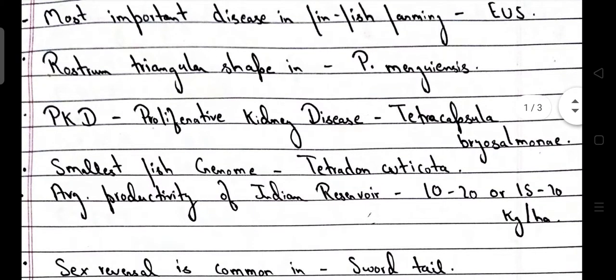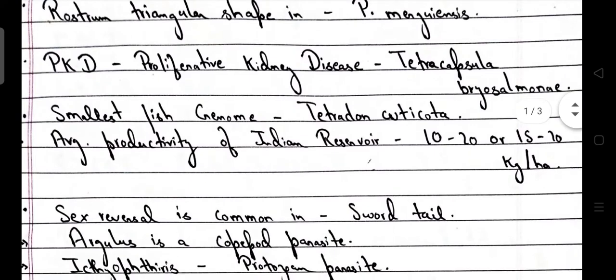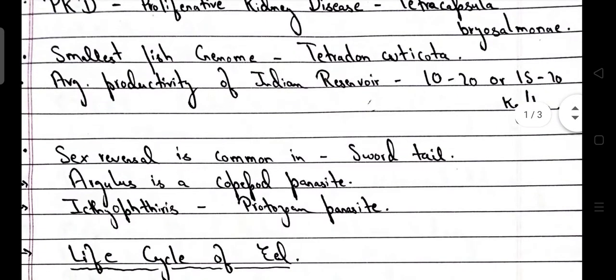Rostrum is triangular in shape in the case of Penaeus merguensis, i.e., Banana Shrimp. PKD — Proliferative Kidney Disease — is caused by Tetracapsula bryosalmonae. The smallest fish genome is that of Tetraodon nigroviridis.